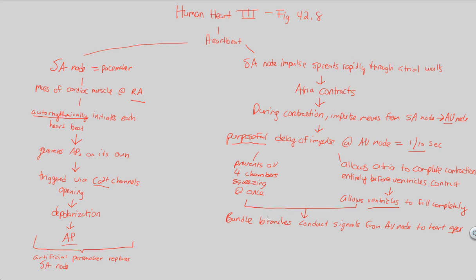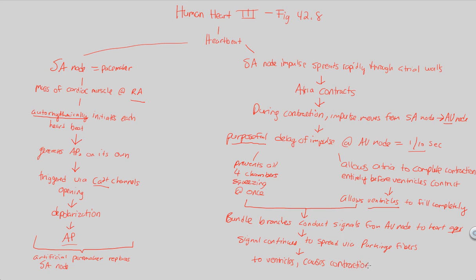Once the signal reaches the lowest part of the heart — the heart apex — it continues to spread throughout the rest of the heart via Purkinje fibers. These Purkinje fibers propagate the signal even further, eventually allowing it to reach the ventricles that have been filling with blood during that one-tenth of a second. Once the ventricles are filled, they contract and push blood away from the heart to the rest of the body via the systemic circuit.